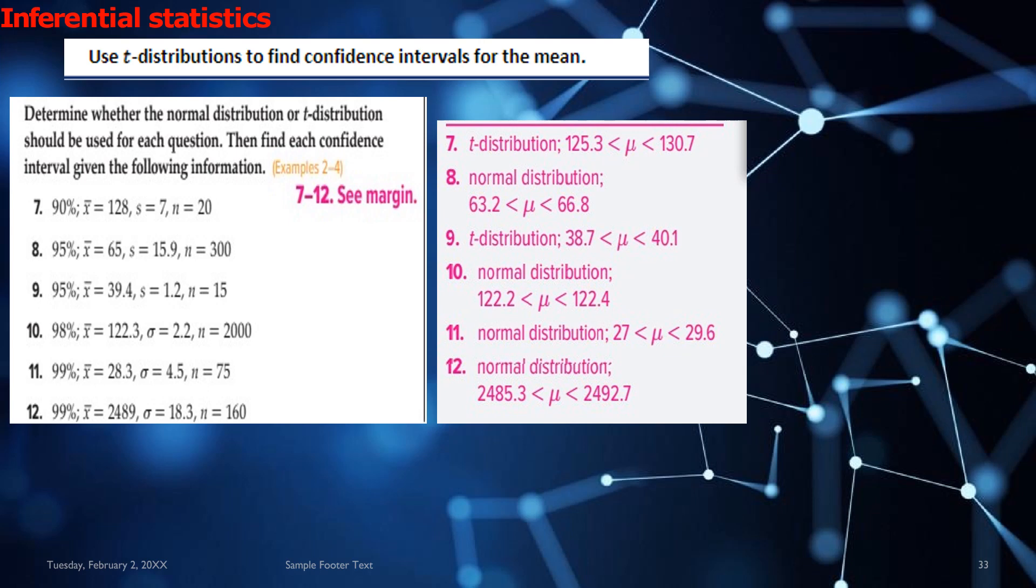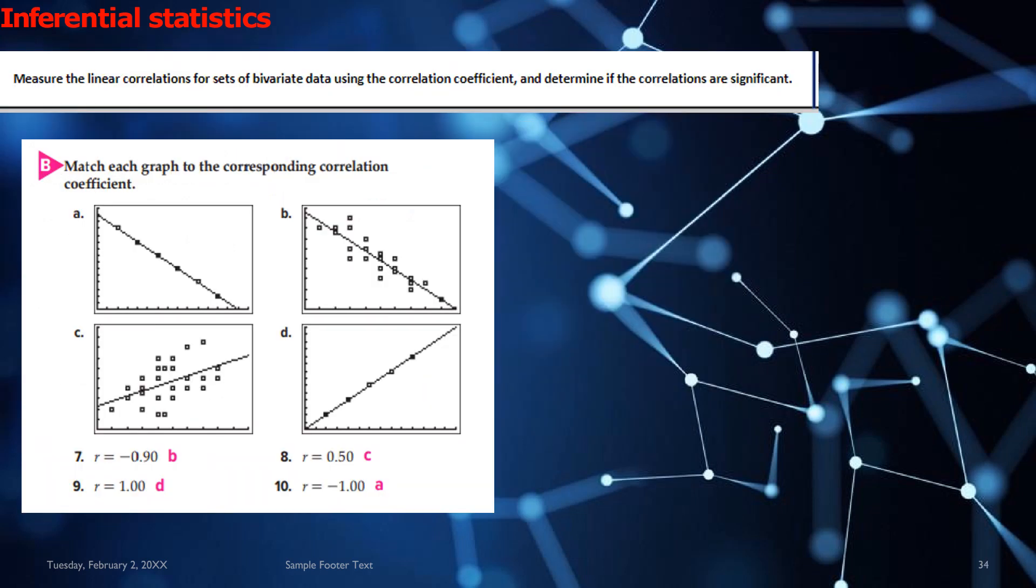Similarly, use the distributions to find confidence intervals for the mean. Questions 7 to 12, you are given the solutions in pink. So you can benefit from the answer key and match each graph to the corresponding correlation coefficient. So the matching has been done for you in pink. And the learning objective that has been met with this question is to measure the linear correlations for set of bivariate data using the correlation coefficient and to determine if the correlations are significant.